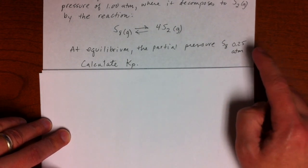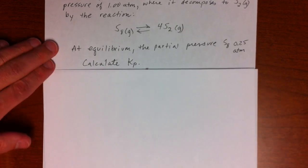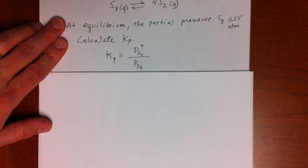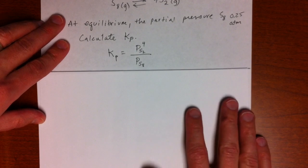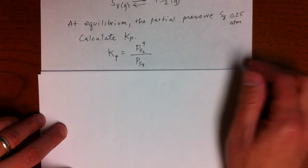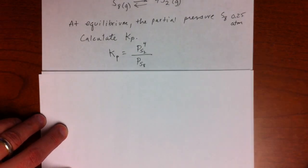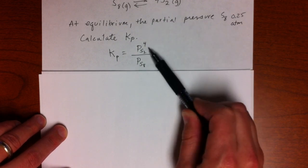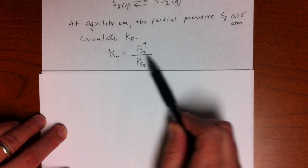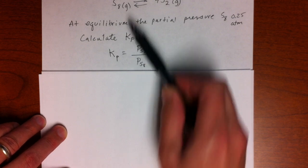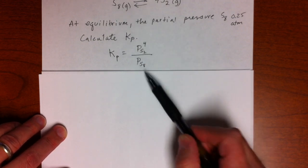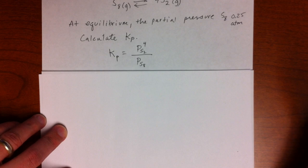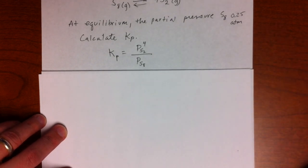So we're first going to write, we want the pressure equilibrium constant, Kp. Remember, that's different than Keq. So that would be the product pressure, S2, to the fourth power, the coefficient, divided by the reactant pressure, S8. And we only have one reactant and one product, so it's a simple expression.